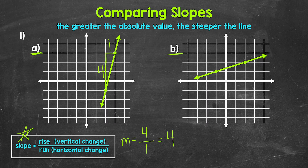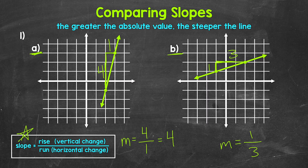Now for line B, the rise is one unit to align with the other point, so the rise is one. For the run, we need to go over three units, so the run is three. The slope equals the rise of one over the run of three — one over three, or one third.